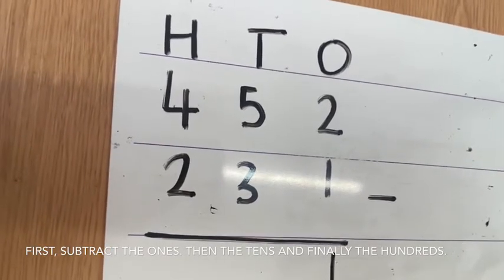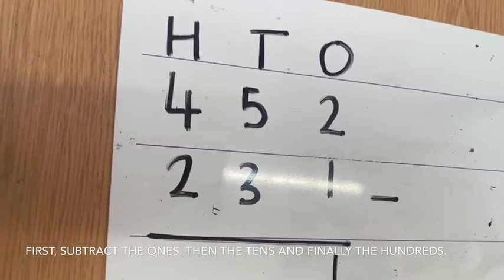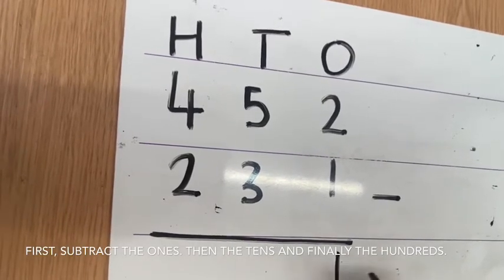Next, the tens. 50 take away 30 equals 20. I only need to record the 2.